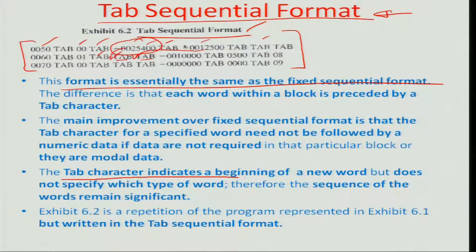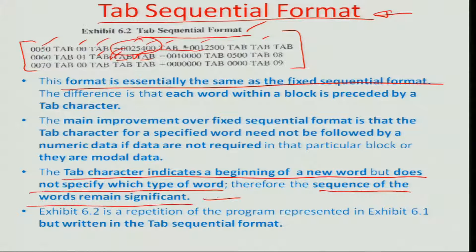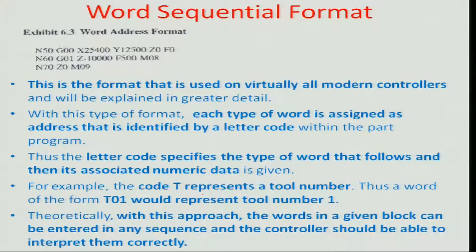The tab character indicates the beginning of a new word but does not specify which type of word. Therefore, the sequence of the word remains significant across the different rows. That is the tab sequential format.